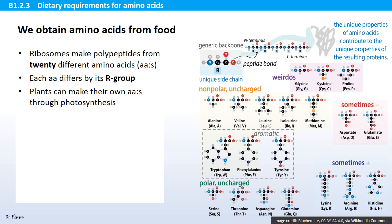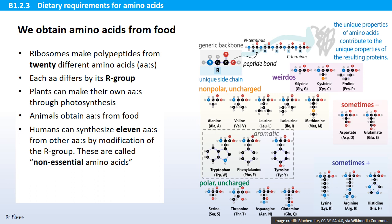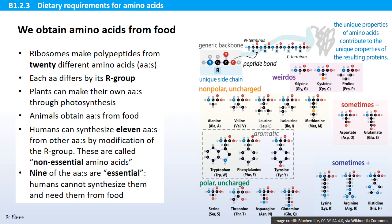Plants can make their own amino acids through photosynthesis, but animals obtain amino acids from food. Humans can synthesize 11 of these amino acids from other amino acids by modification of the R group — these are called non-essential amino acids. The remaining nine are essential amino acids, meaning we cannot synthesize them and need to obtain them from food. The essential ones are shown here in yellow, though you are not expected to know those details.